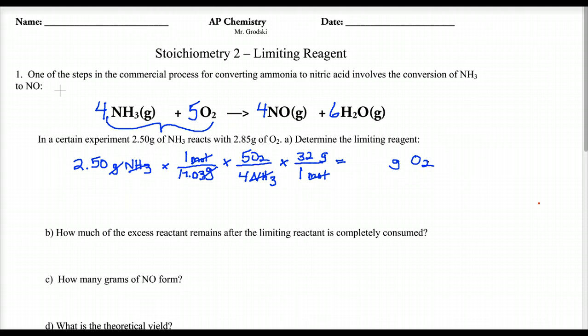So let's put that in the calculator. I'll put my 2.50 divide by 17.03 times 5 divide by 4 times 32. And I get 5.8719. Just put some numbers in here. Don't really care about the sig figs because I'm just determining who is the limiting reagent from this math. 5.872, I'm just rounding off, grams of O₂.